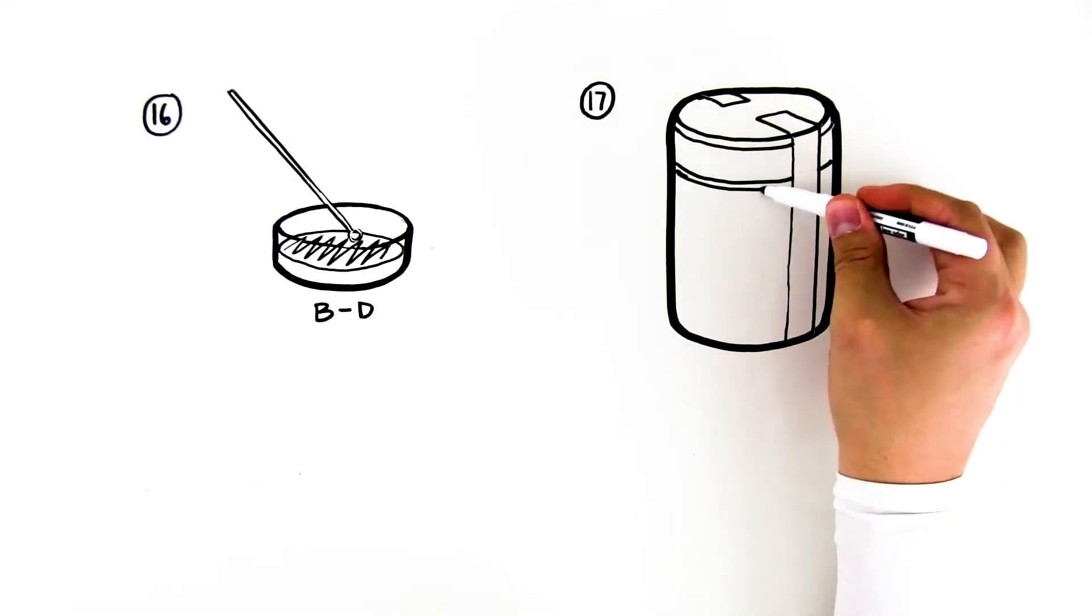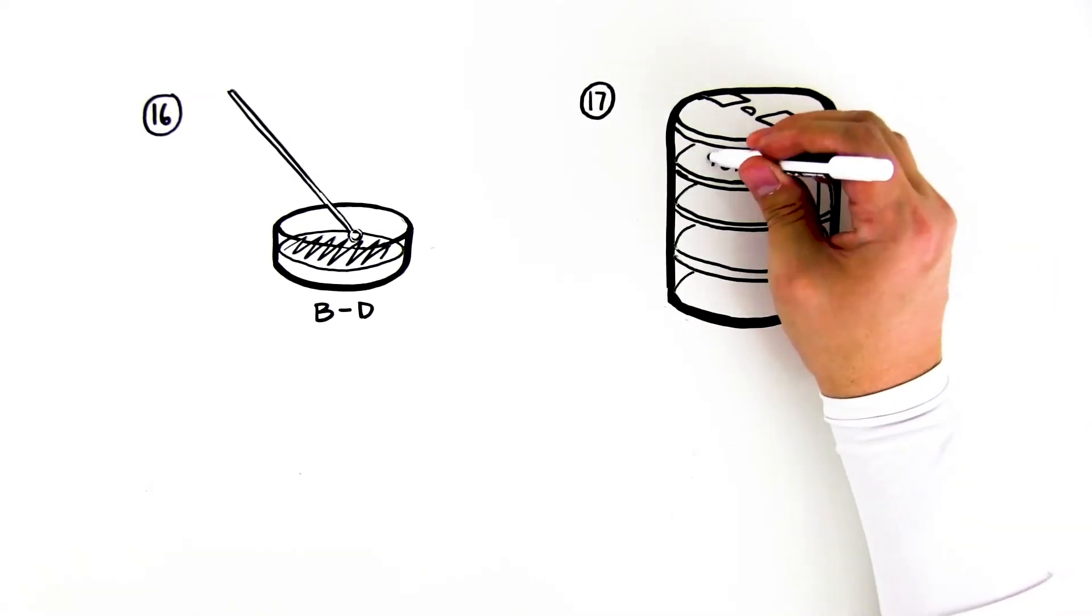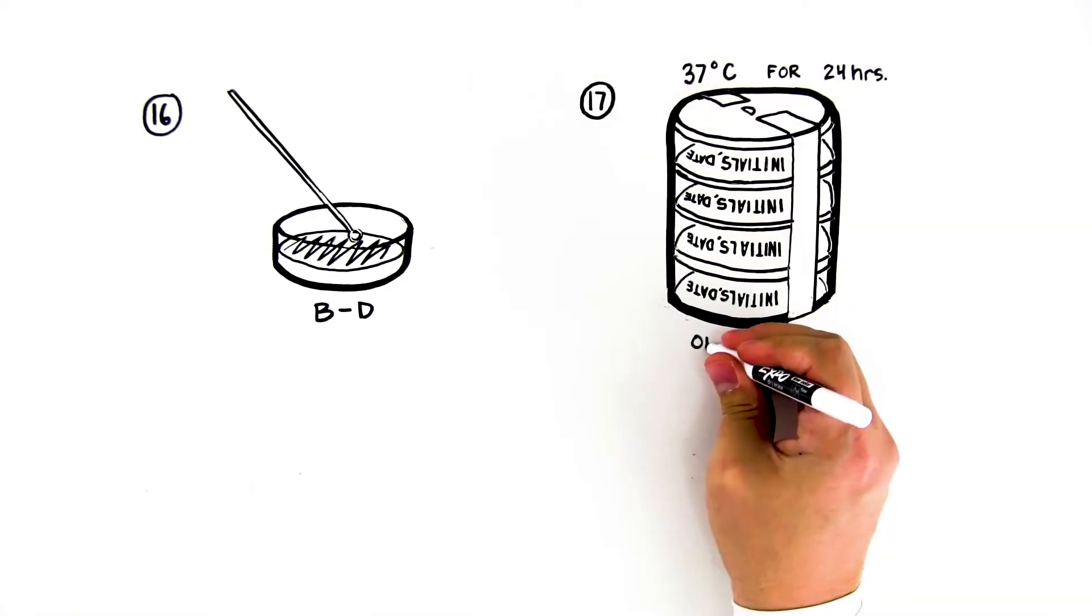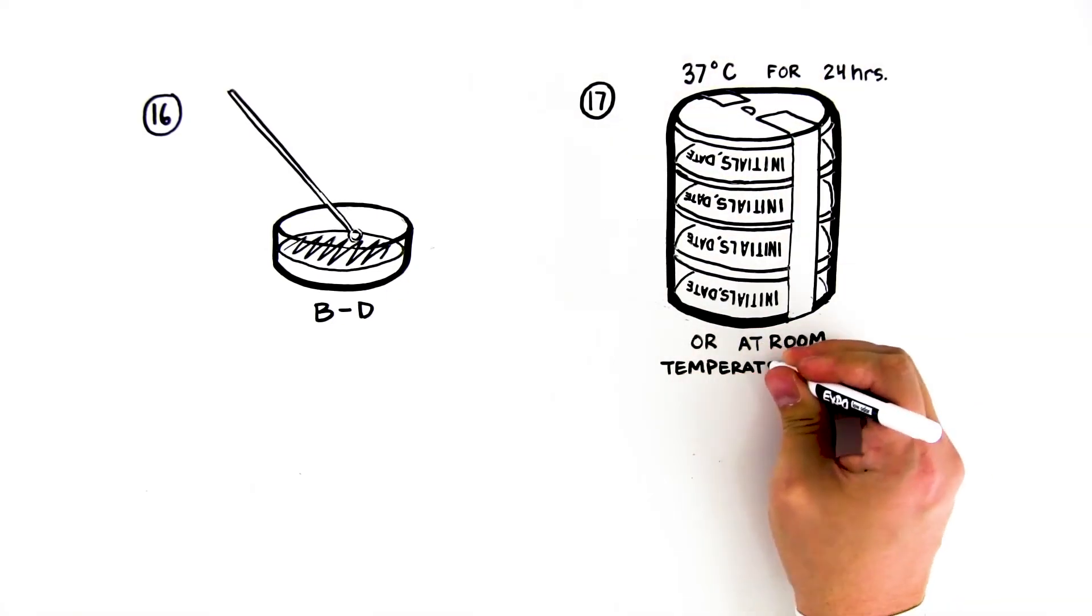Step 17: Cover, stack, tape, and label your plates. Incubate the plates upside down at 37 degrees Celsius for 24 hours or at room temperature for 2 to 3 days.